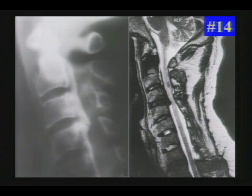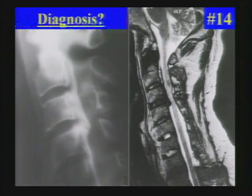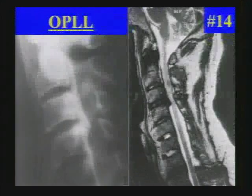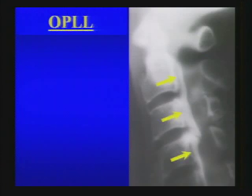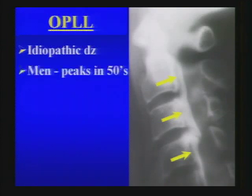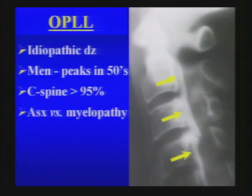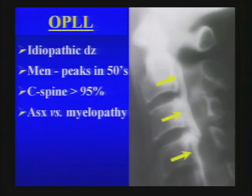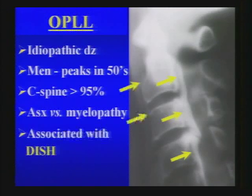Next — OPLL, or ossification of the posterior longitudinal ligament. It is an idiopathic disease most commonly seen in older men, affecting the cervical spine in more than 95% of cases. Although it may be asymptomatic, it can cause myelopathy when there is enough to contribute to central canal stenosis. When you see OPLL, look for DISH; and when you see DISH, look for OPLL.